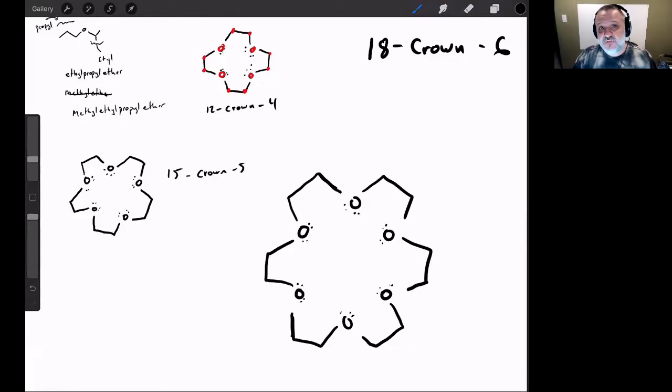That's it for naming ethers, naming crown ethers, naming thiols, and naming thiols when they're substituents, in other words, using the substituent name mercapto. Next thing we're going to do is get into some of those reactions and mechanisms for those things. And that's going to be a little bit more heady. And so we're going to leave it there for now. You guys have a good one.